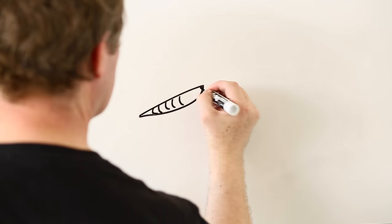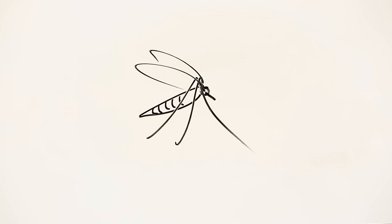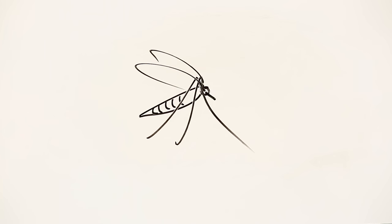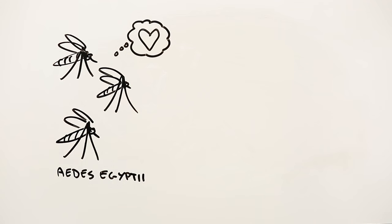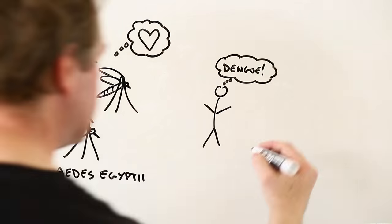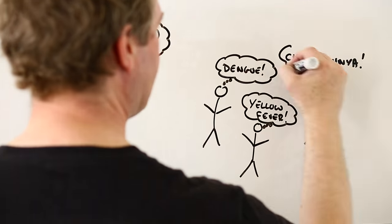Number one: Zika is primarily carried by mosquitoes, and not just any mosquito. The primary culprit here is the species Aedes aegypti. It's a mosquito that loves people and it's also associated with diseases like dengue, yellow fever and chikungunya.